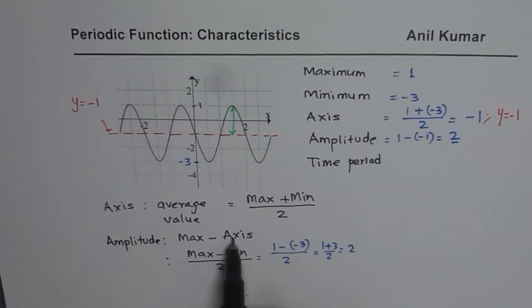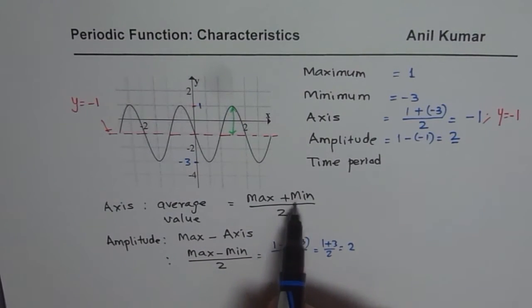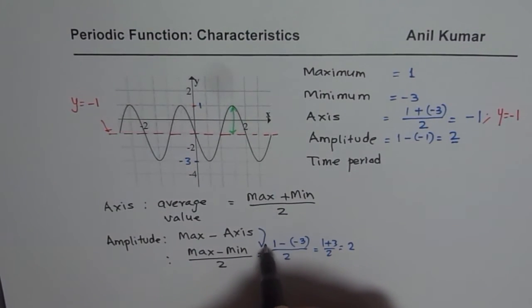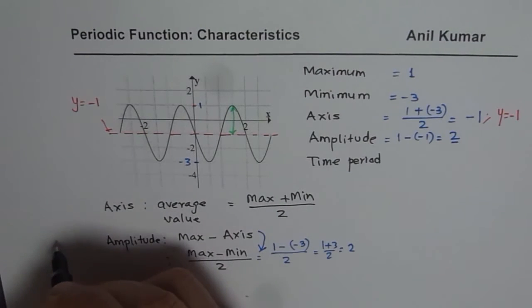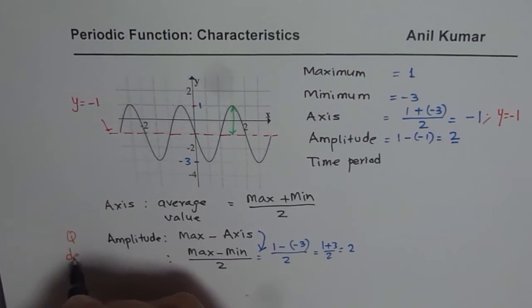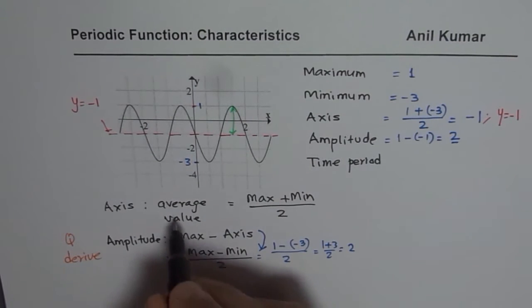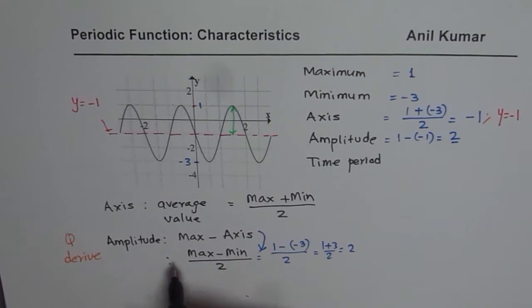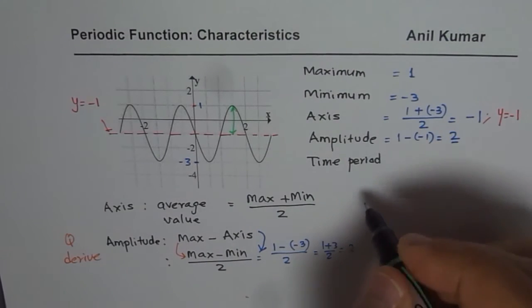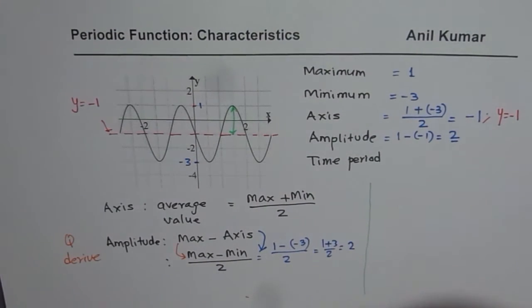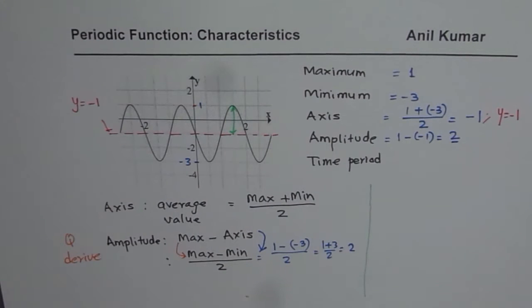As an exercise, you can use the formula amplitude = maximum − axis, replace axis with (maximum + minimum) / 2, and derive the second formula. Show that these two expressions are the same equation. It is always good to explore a little bit more than what I'm telling you.